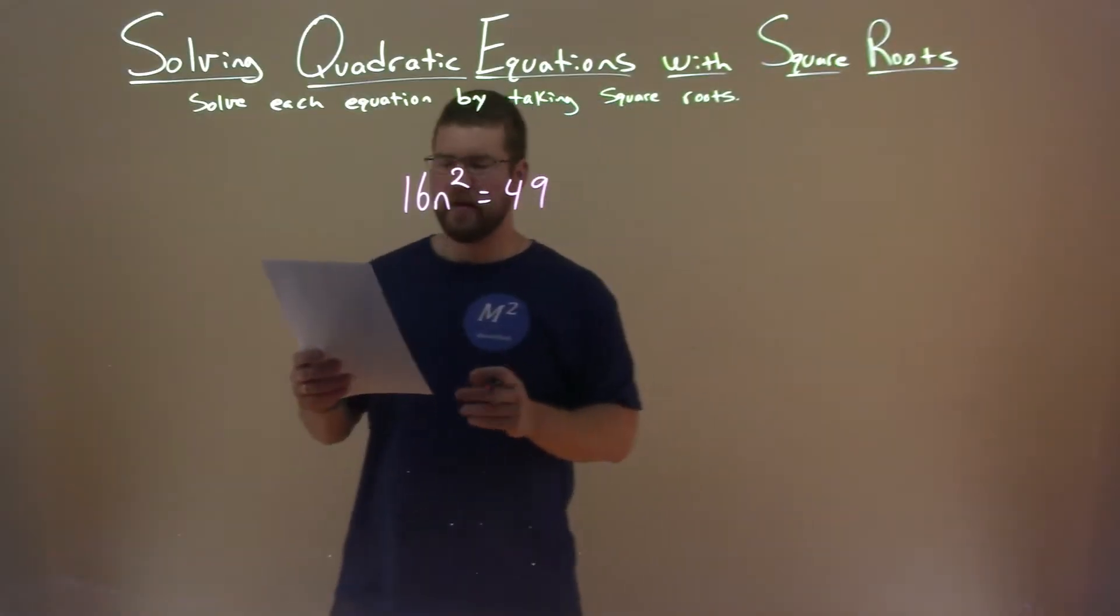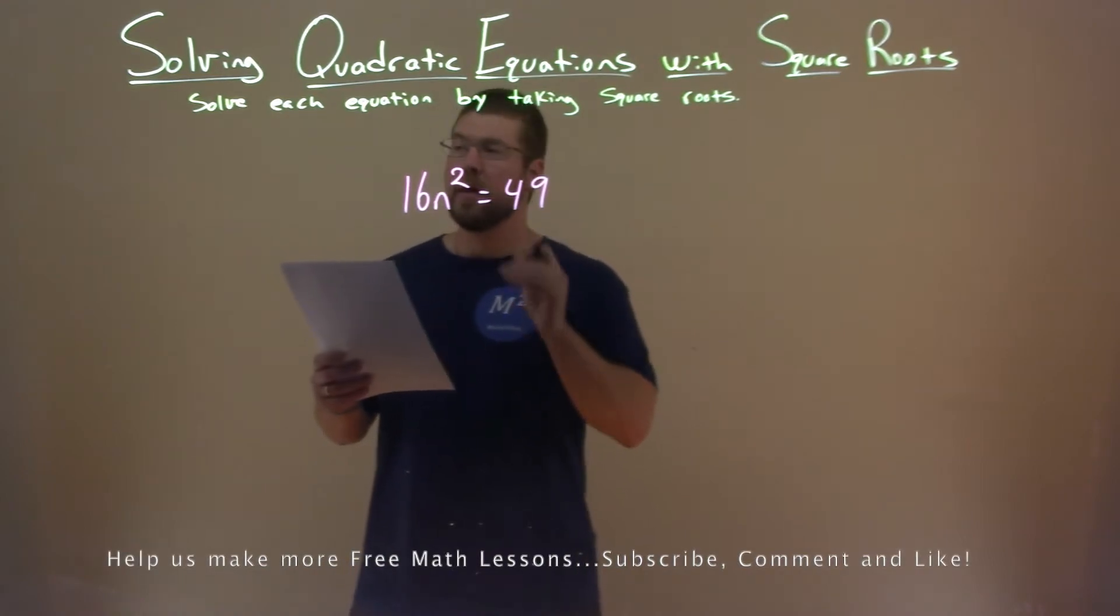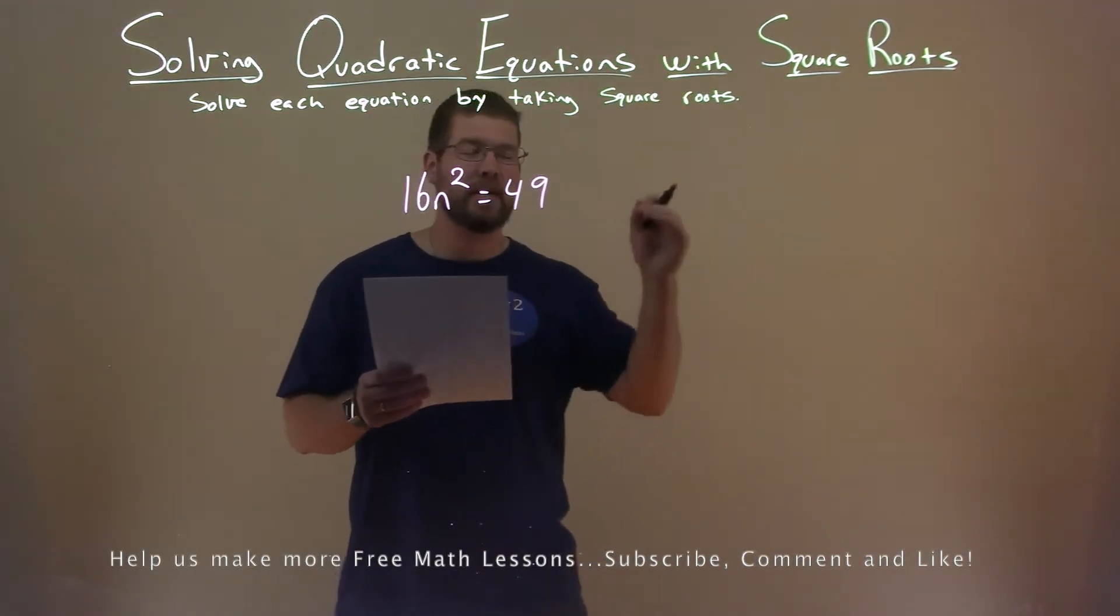We're given this problem here: 16n squared equals 49, and we want to solve each equation by taking square roots.